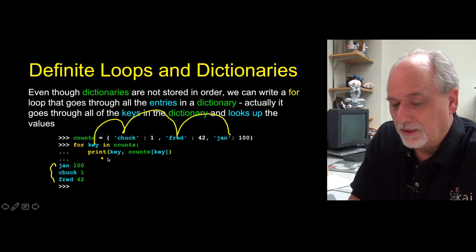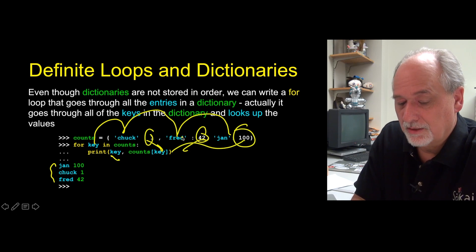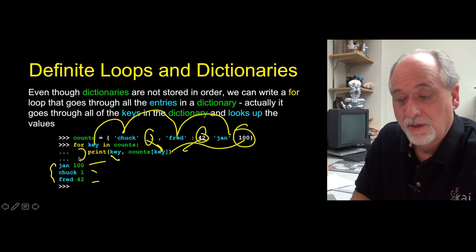And so you can, in the loop, you can get the key. And so that's what prints out the Chuck, Jan, Chuck, Fred. But then you can also get the corresponding count for each one of these by just pulling it out of the array. I mean pulling it out of the dictionary, right? And so we can pull out the corresponding value. And so we print out Jan, 100, Chuck, 1, Fred, 2. And that runs this loop three times.